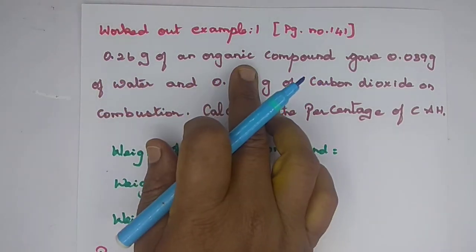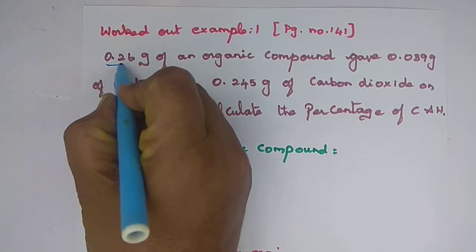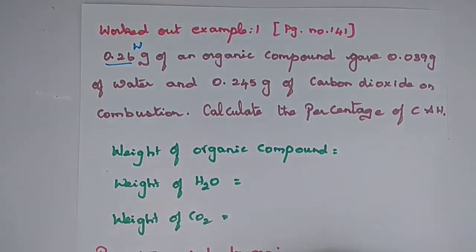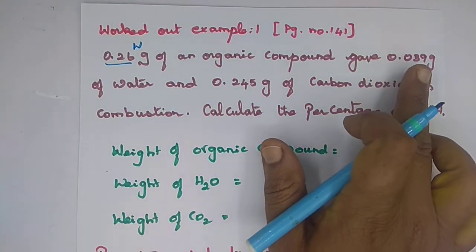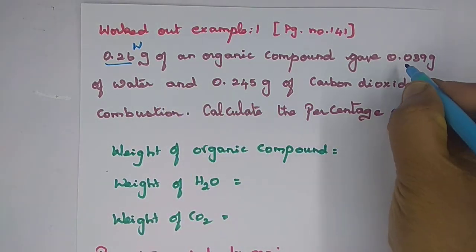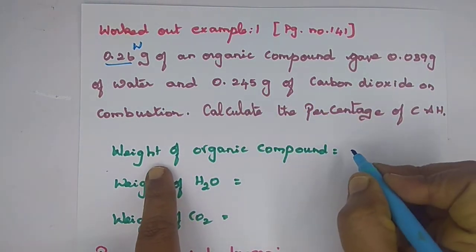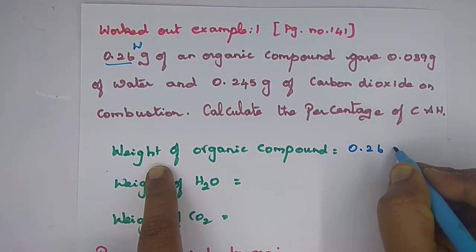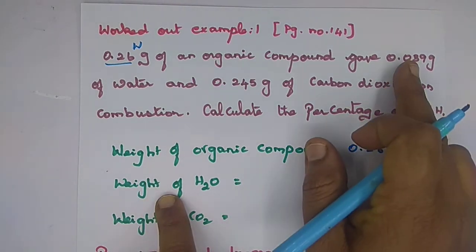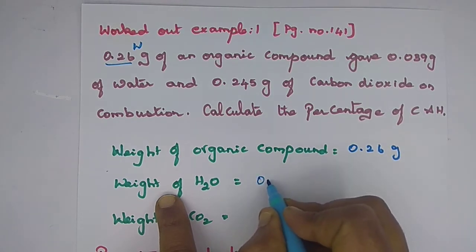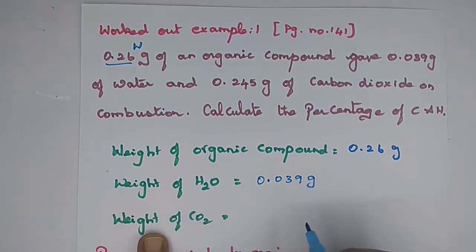Now this is the organic compound weight, underline the W gram. This is water. Weight of organic compound is 0.26 gram. Weight of water is 0.039 gram. Weight of carbon dioxide on combustion is 0.245 gram.